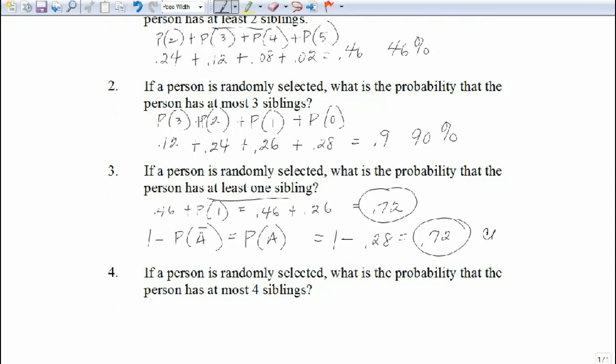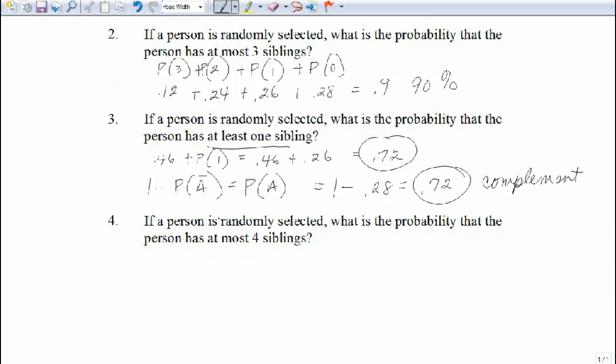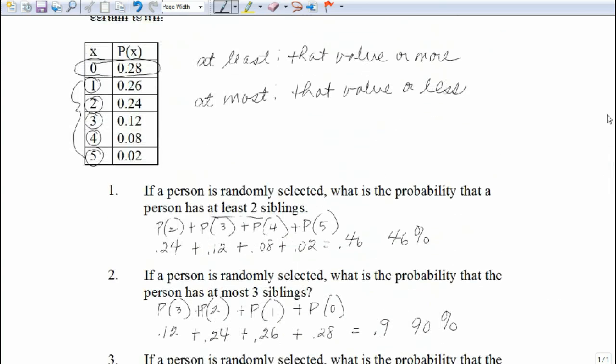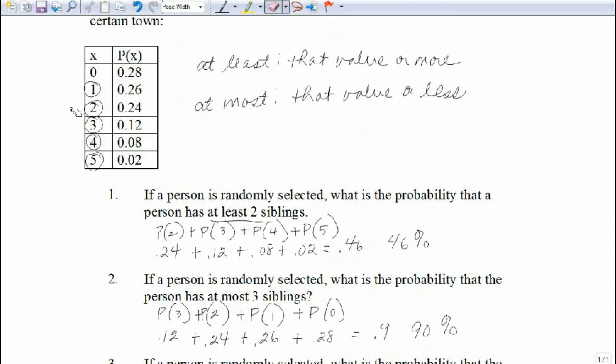So this is using the complement. And let's look at our final question. If a person is randomly selected, what is the probability that the person has at most four? Well, let's go back. Erase what we did.